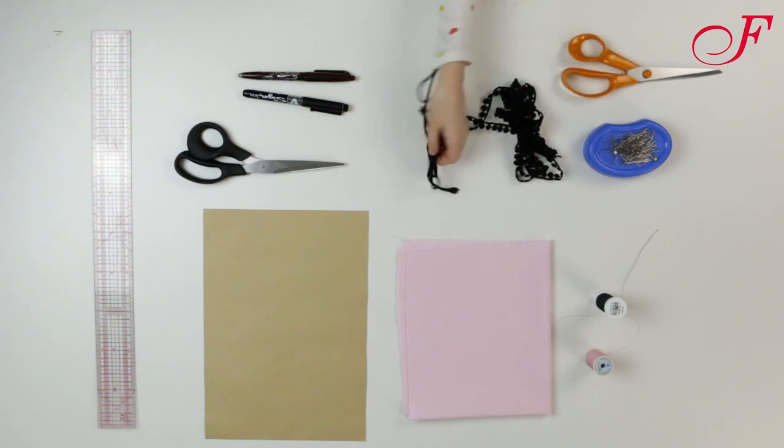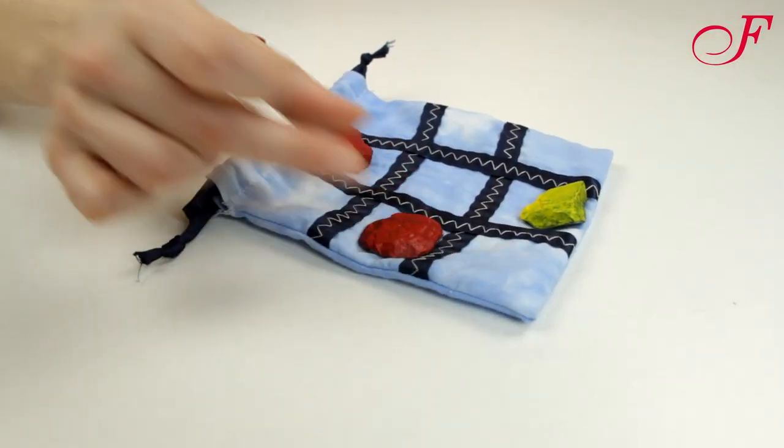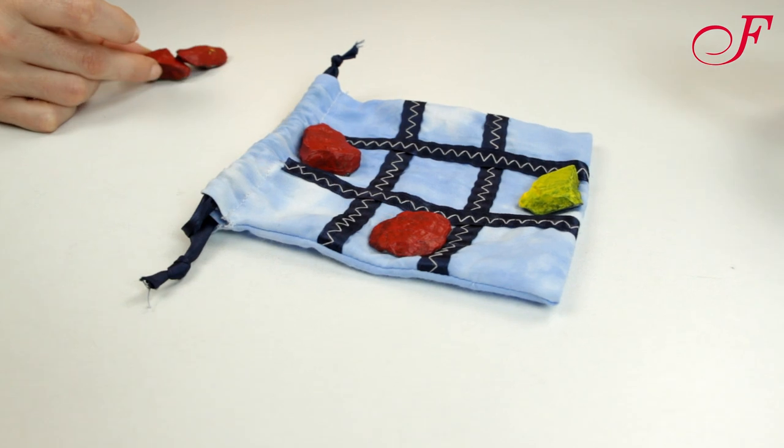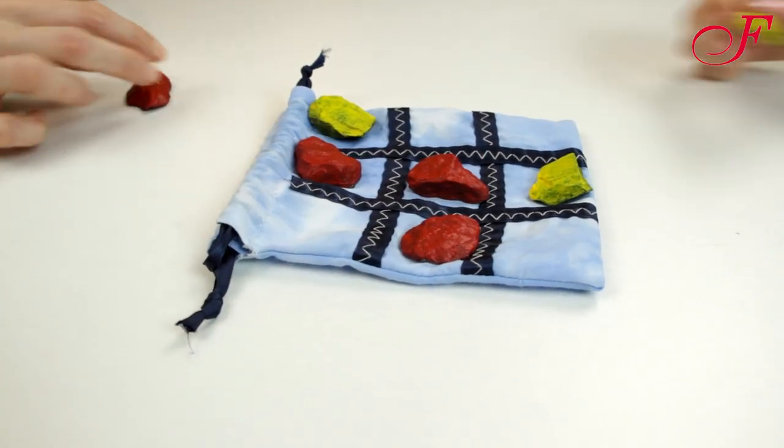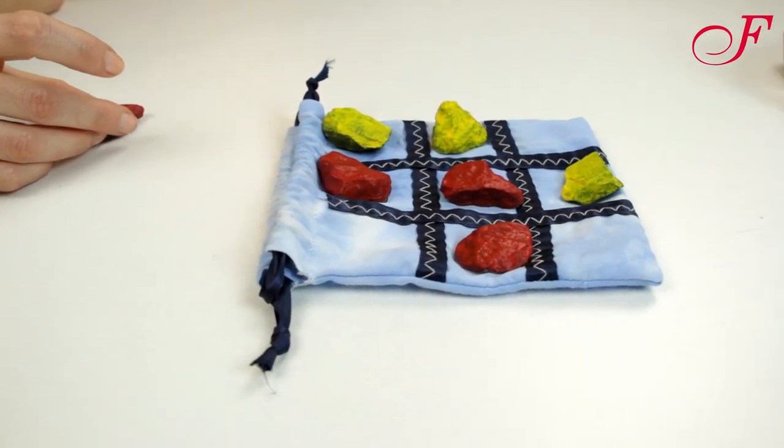A piece of cord, buttons, little rocks, felt scraps for the pieces, paint and colored pencils if you like to decorate the pieces. You also need a sewing machine and a steam iron.